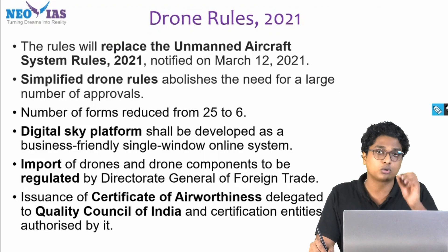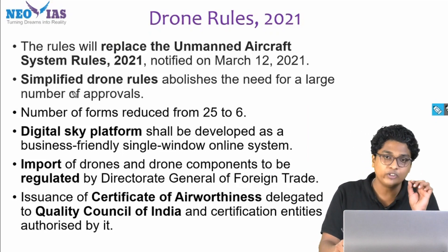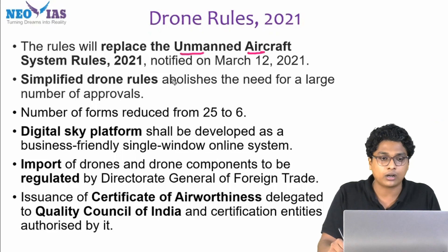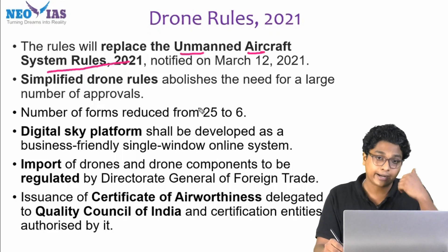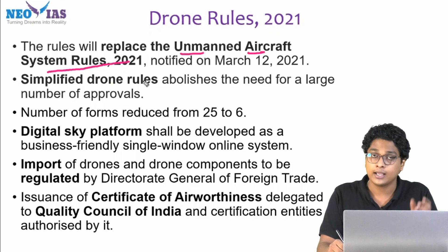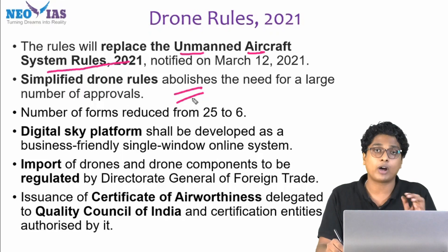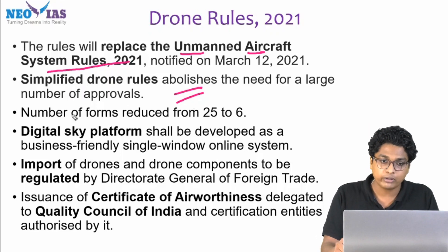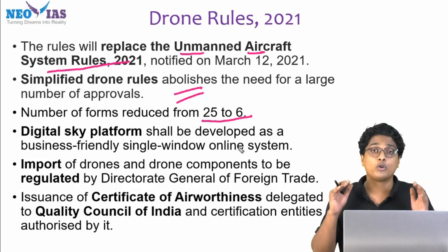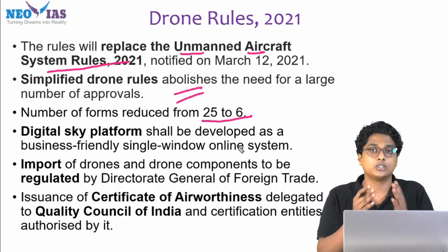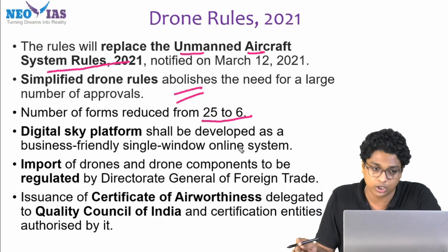The general idea regarding Drone Rules 2021 is that they are trying to simplify the process. This rule will replace the Unmanned Aircraft Systems Rule, which was notified in March 2021. The simplified drone rules abolish the need for a large number of approvals — to be exact, the number of forms has been reduced from 25 to 6. It would be easier to own and operate drones in India with the various approvals being abolished.